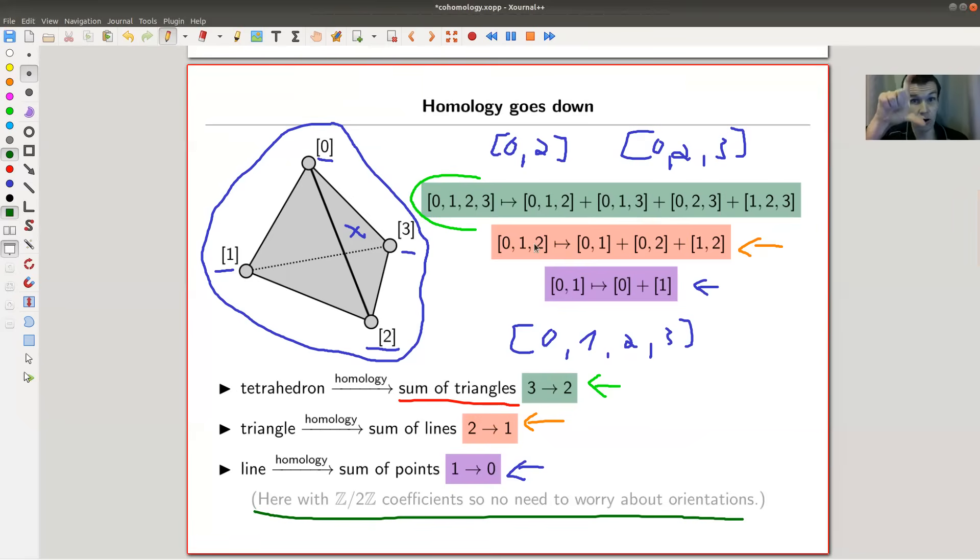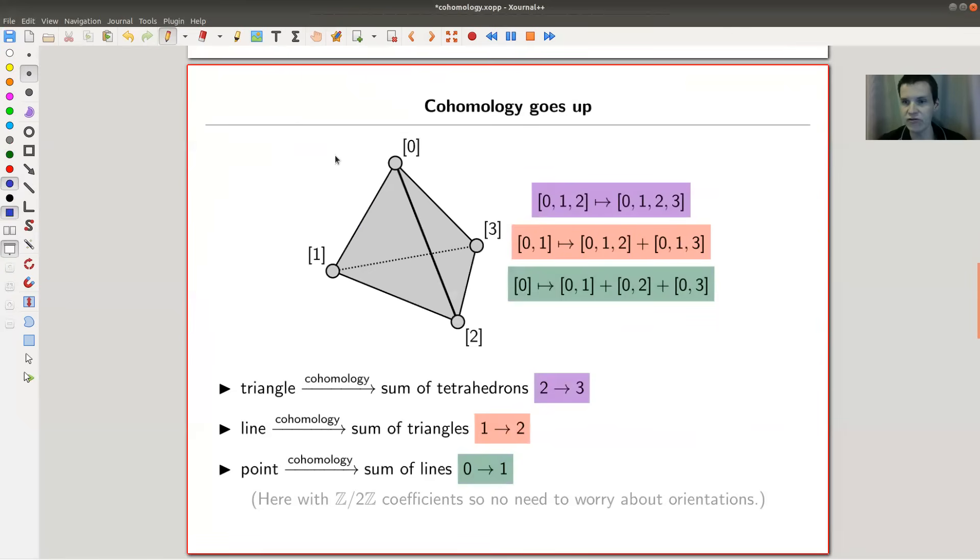And again, there is no reason to prefer a column over a row. So there should be a way of reversing everything, kind of same picture, but slightly different setup. So in cohomology, I would like to turn everything on its head. So I would like to go from 2 to 3. I would like to go from 1 to 2. And I would like to go from 0 to 1, again with Z/2 coefficients. So I would like to associate a triangle to a tetrahedron. I would like to associate the line to triangles. And I would like to associate a point to lines and so on. So a tetrahedron to a four dimensional version of a tetrahedron, whatever that is.